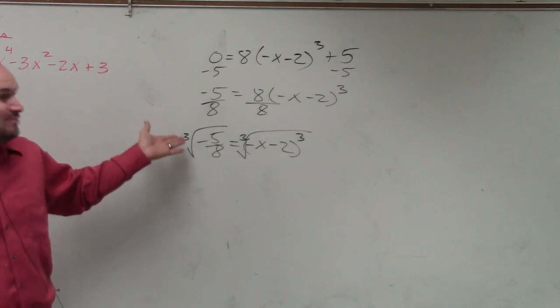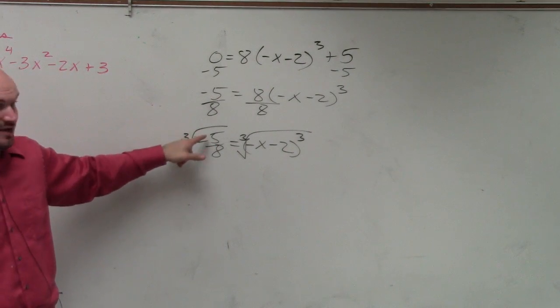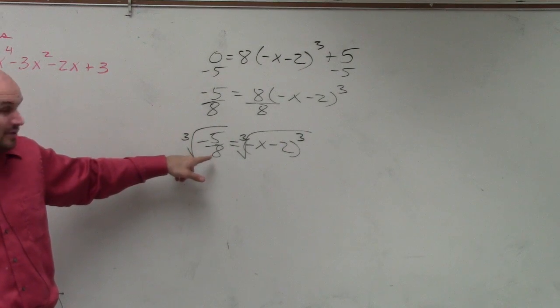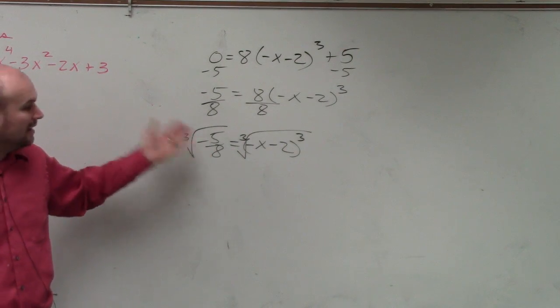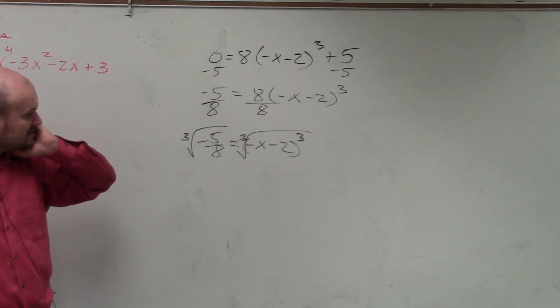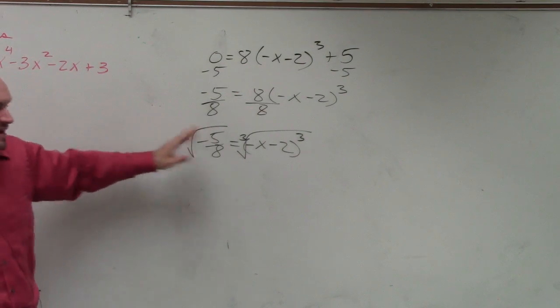I don't know what number multiplied by itself three times gives you a negative 5. I do know that the cube root of 8 is 2. But I'm just going to leave that as is for right now.